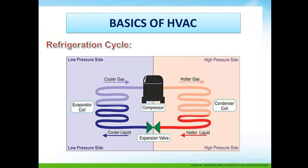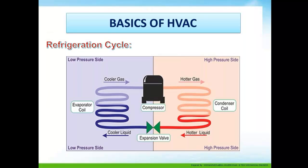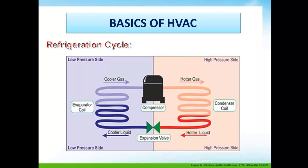The refrigeration cycle consists of four major components: compressor, condenser coil, expansion valve, and evaporator coil. The right-hand side is the high-pressure side of the refrigeration cycle and the left-hand side is the low-pressure side.